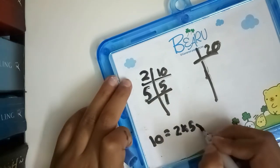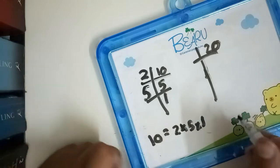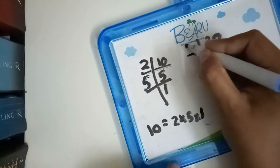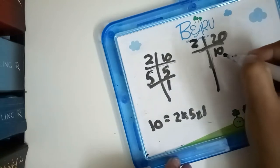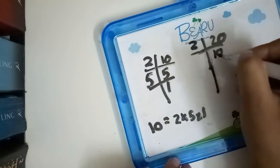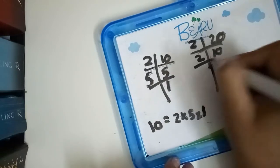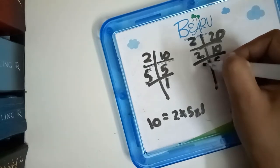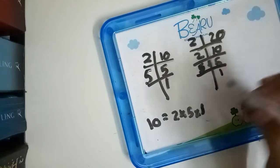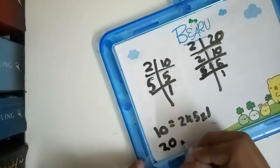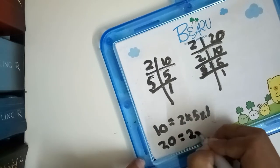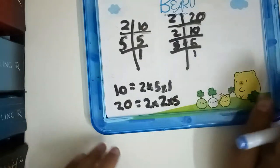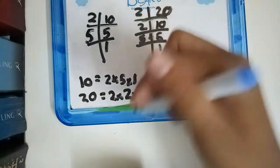Now the same for 20. Is 20 divisible by 2? Yes — 10. Is 10 divisible by 2? Yes — 5. Is 5 divisible by 5? Yes. So 20 is equal to 2 multiplied by 2 multiplied by 5.